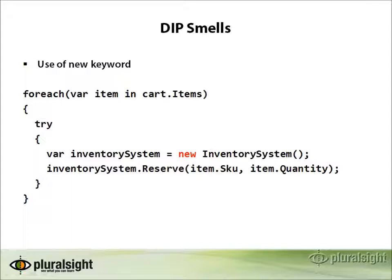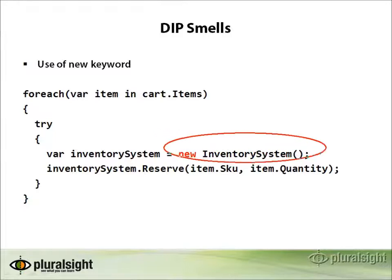Now let's look at some design smells related to the Dependency Inversion Principle. The first is simply the use of the new keyword. If you find in your code that you're using new to instantiate specific classes rather than interfaces, it's often a sign you could apply DIP. This new InventorySystem, for example — if it has external dependencies like a database, the code around it has inherited that dependency. The only way to keep the calling code from inheriting those dependencies is to replace that with an abstraction and inject the interface using the Strategy Pattern and constructor injection.